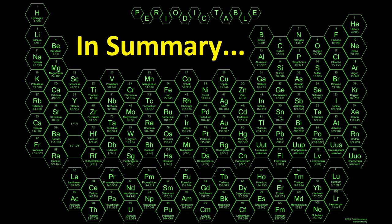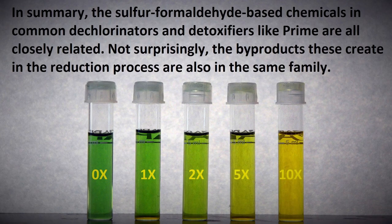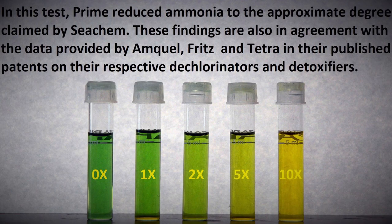In summary, prior to treatment, five identical vials each had four parts per million of ammonia. Prime dosages from zero to ten times were applied, and these are the results after three hours. The sulfur formaldehyde-based chemicals in common dechlorinators and detoxifiers like Prime are all closely related, and the byproducts they create in the reduction process are also in the same family. Prime reduced ammonia to the approximate degree claimed by Seachem. These findings are also in agreement with data provided by Amquel, Fritz, and Tetra in their published patents on their respective dechlorinators and detoxifiers.